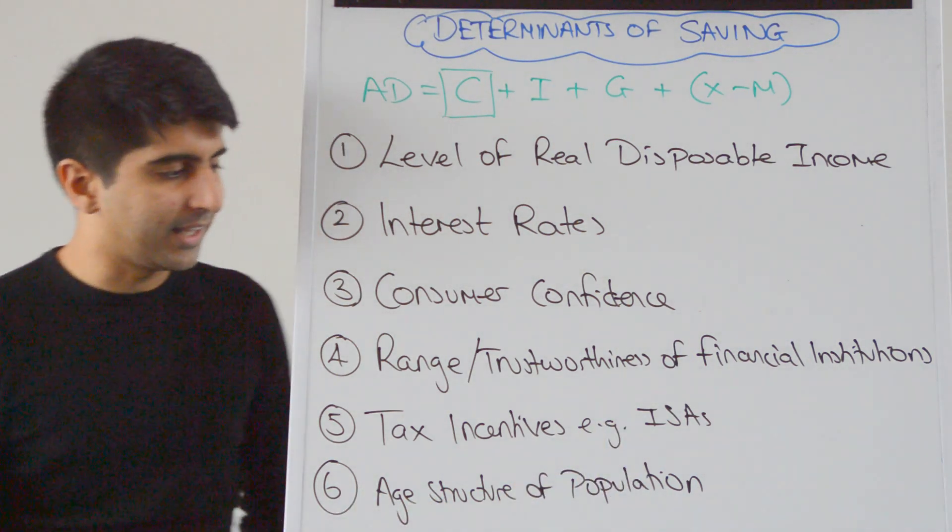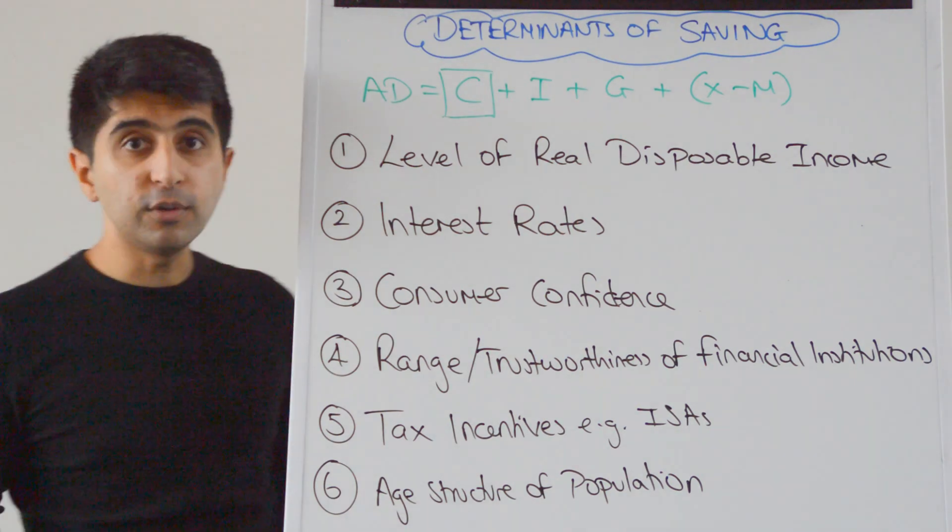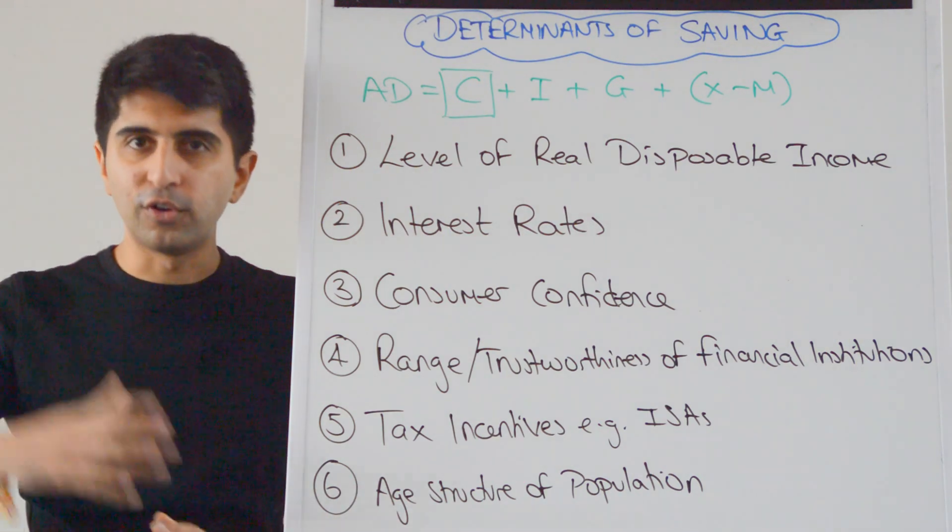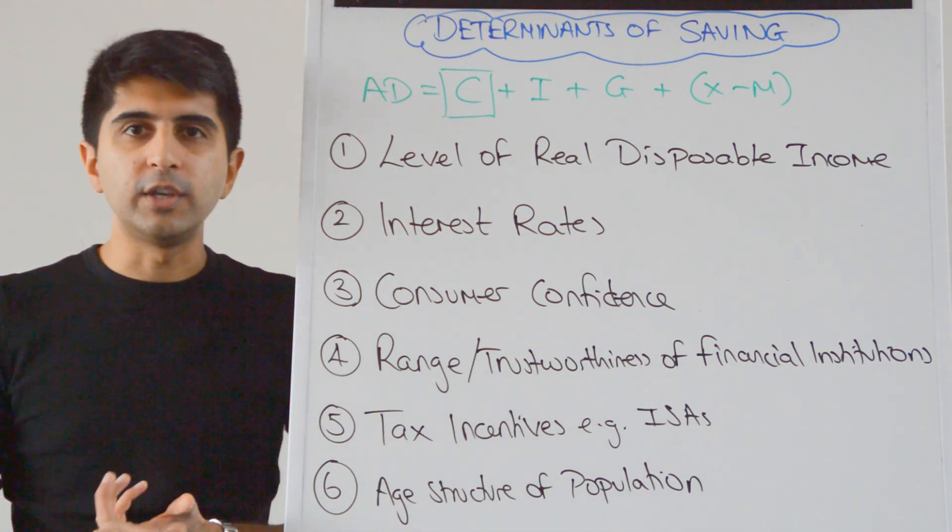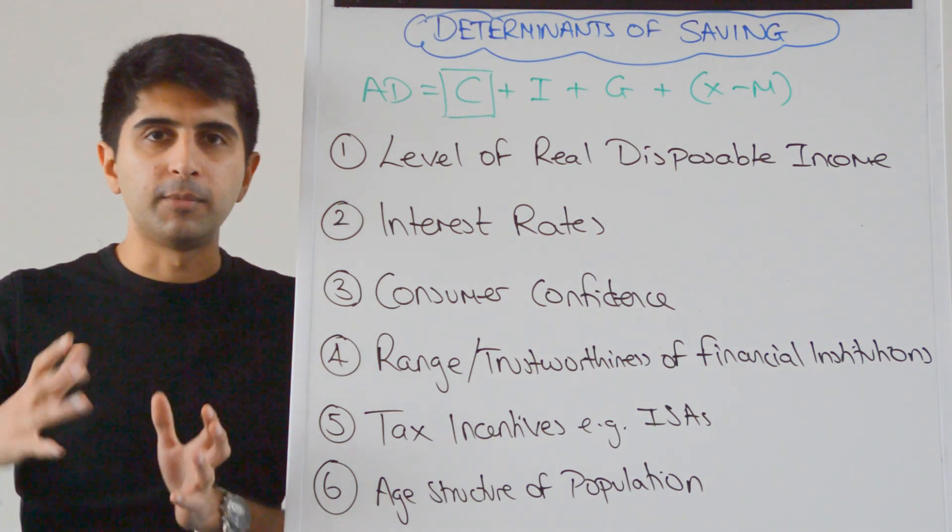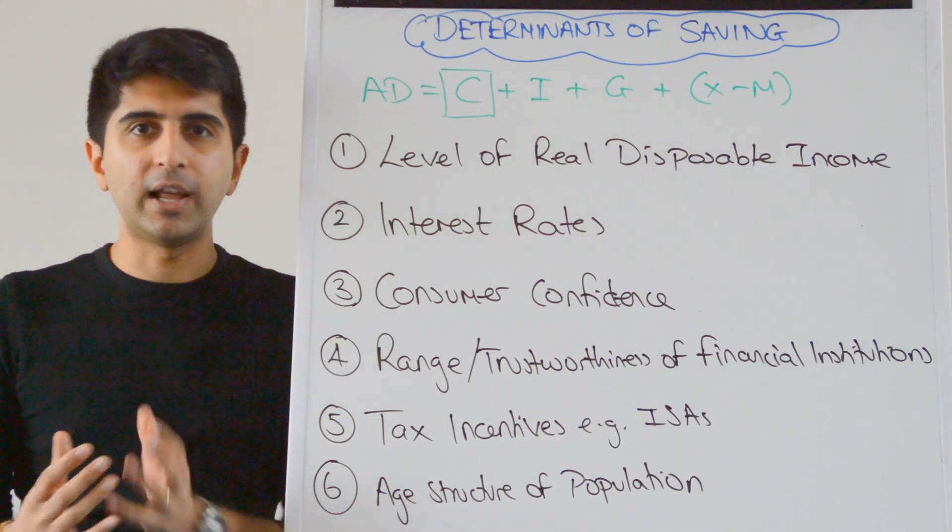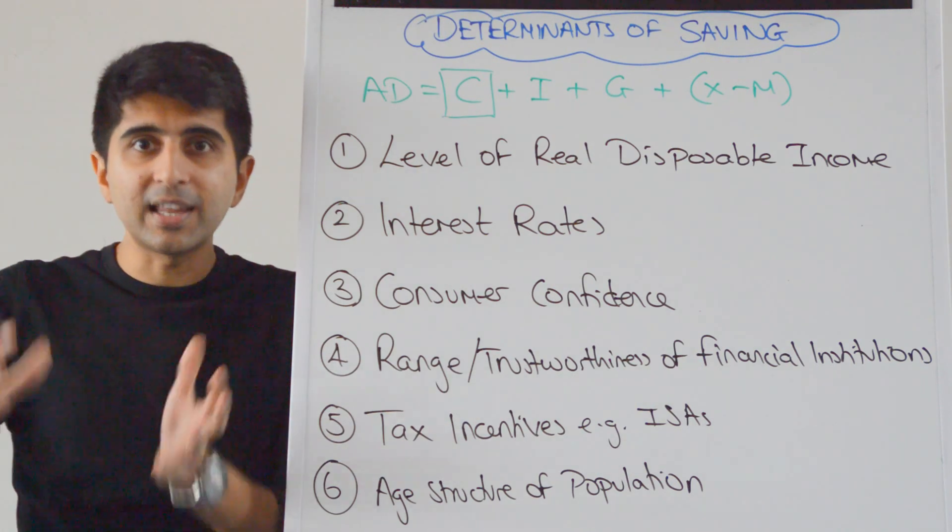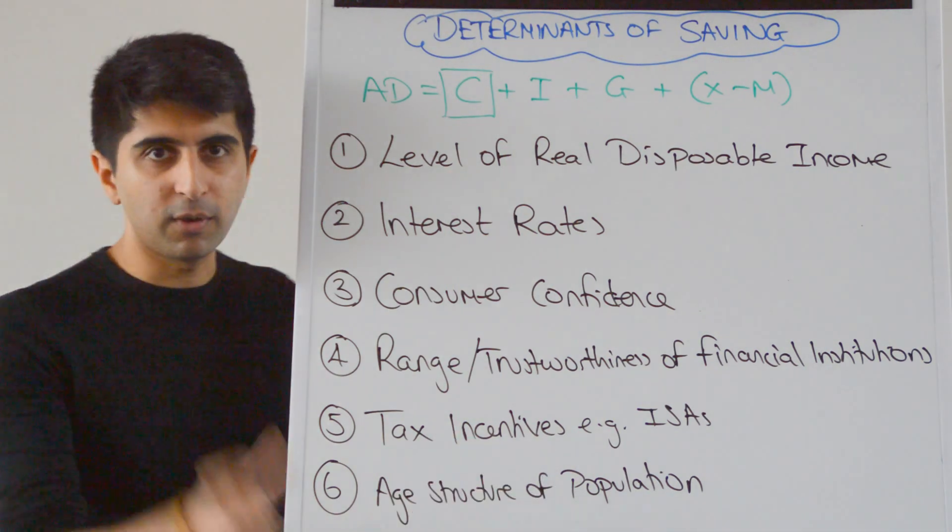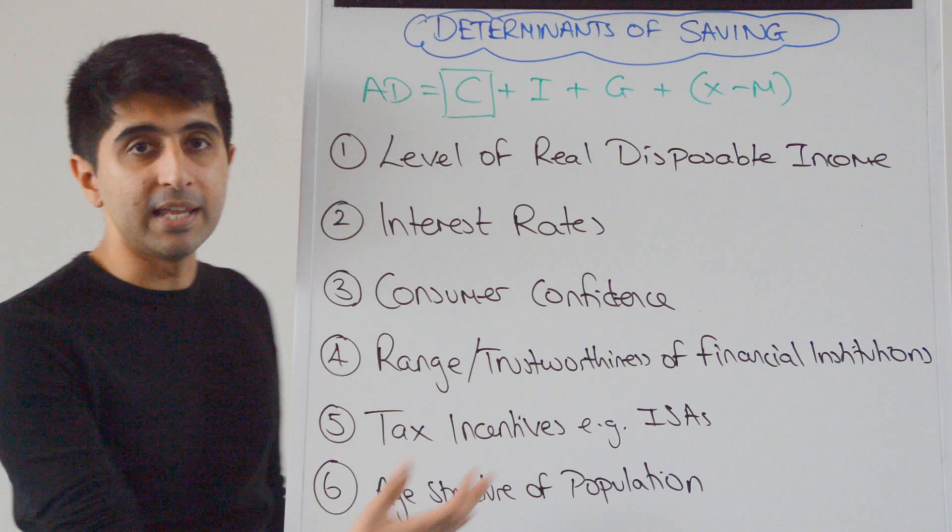An economist called Modigliani argued that the age structure of the population has got a big role to play in the level of savings. He argued that the middle-aged individual is more likely to save their money for their children and for their own retirement. Whereas those who are younger, so you know between the ages of 15 and 30 in the economy are more likely to spend their money and the pensioners, so those who are aged above 60 years old are more likely to spend their money too. Whereas those who fit in between that gap are more likely to save their money. So the middle-aged population are likely to save their money. So if you have a population where that is the majority of your population then likelihood is that savings are going to rise if you believe the thesis of Modigliani.